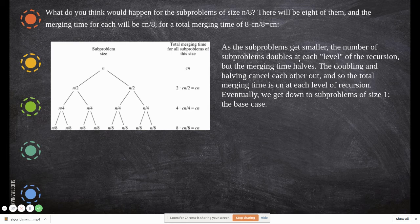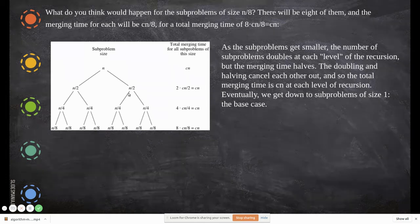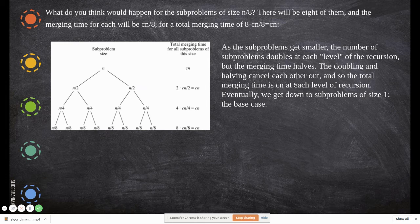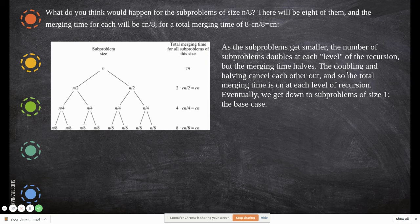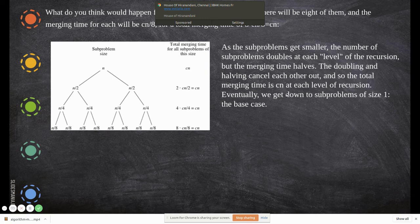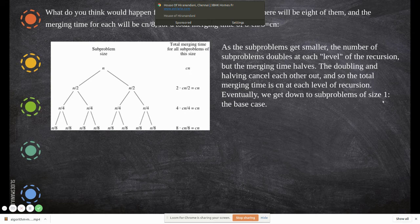As the subproblems get smaller, the number of subproblems doubles at each level, and each doubles. But the merging time, halving and doubling cancel each other out. So the total merging time is cn at each level of recursion.